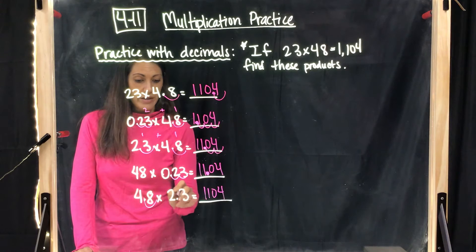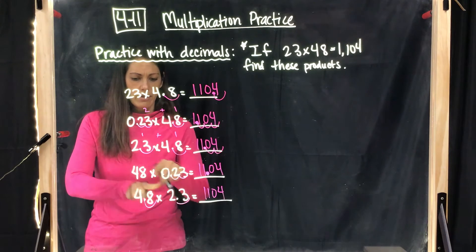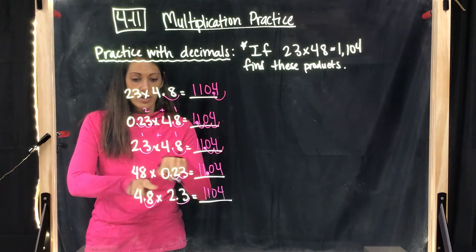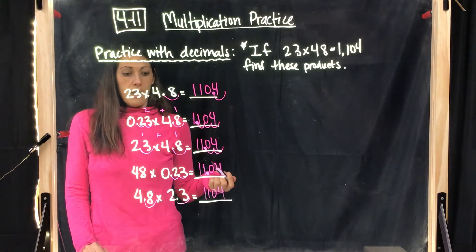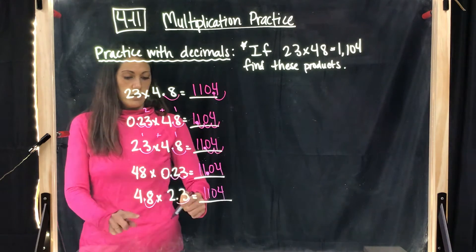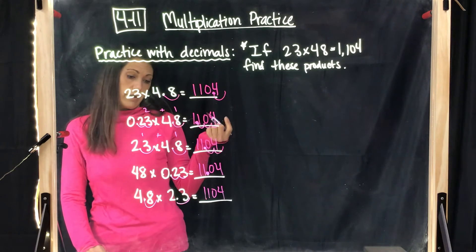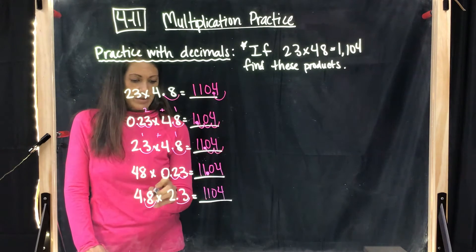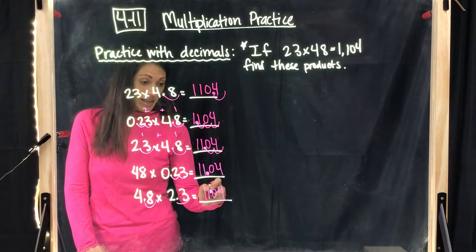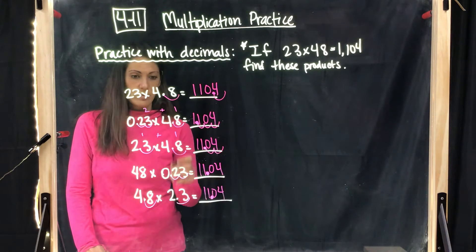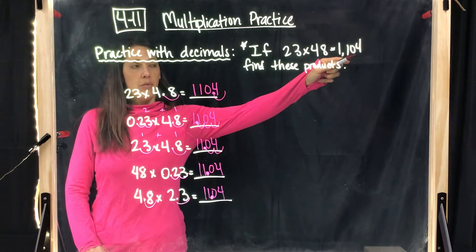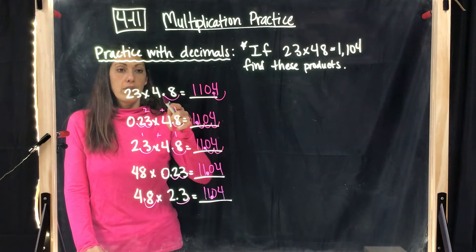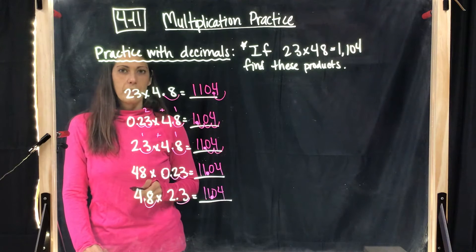This one, again, one, two. Now, I noticed that the 48 and the 23 have switched, but the commutative property tells us that you can switch multiplication and the factors, and it doesn't matter. Your answer will still be the same. So this is two, which will be the same answer as before. So when you are given an equation with an answer, you know that you just have to do the decimal move. So it's actually a pretty easy problem.